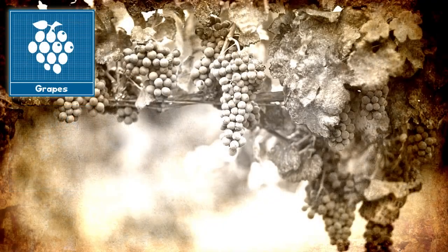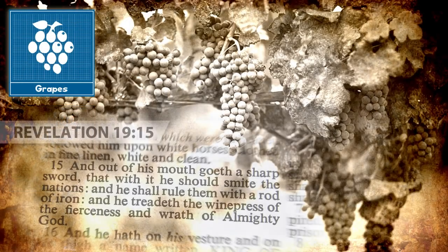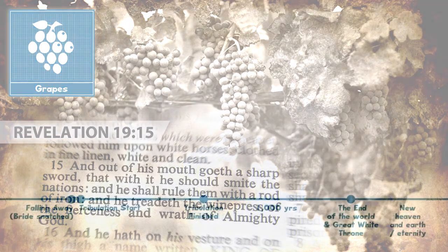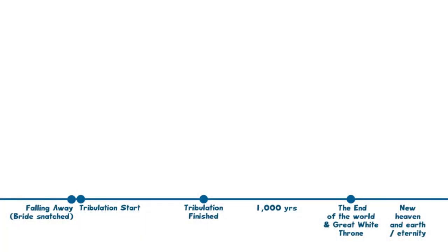Grapes do not have chaff, but they do have flesh. These are the unbelievers. These will be crushed in the winepress of God's fury at the Battle of Armageddon. When we look on a timeline, we see different stages that will be happening prophetically — very similar to how there are different harvests at different times throughout the year for different crops.